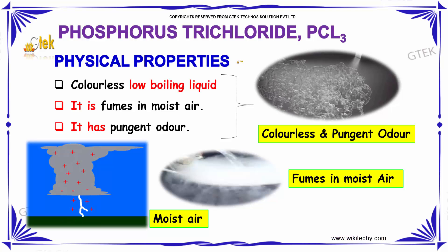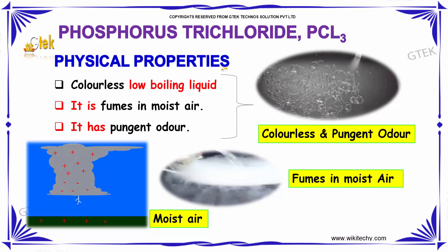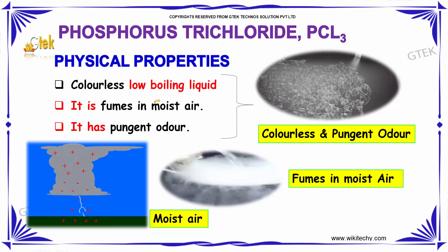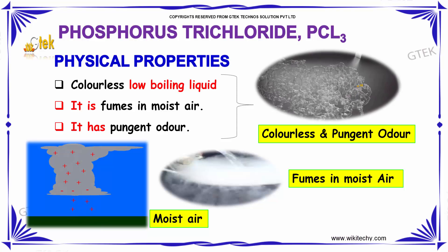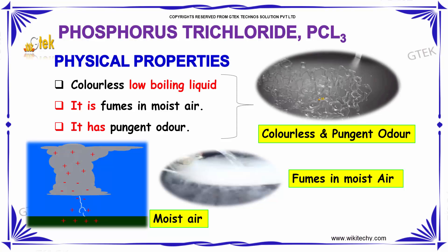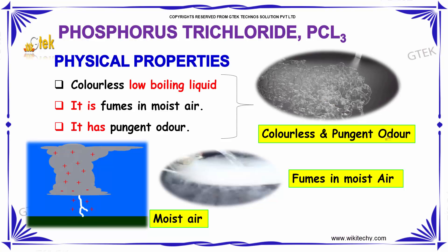We are looking into phosphorus trichloride and its physical properties. As indicated, phosphorus trichloride is colorless and has a low boiling point, so it is a low boiling liquid. It has a pungent odor and fumes in moist air.